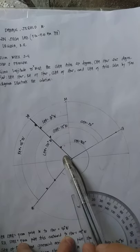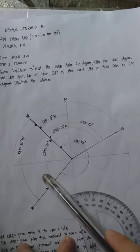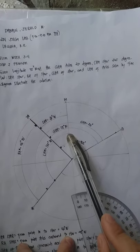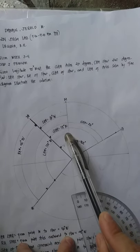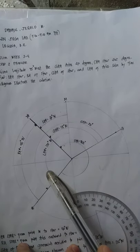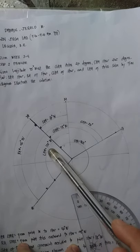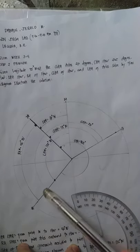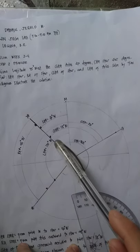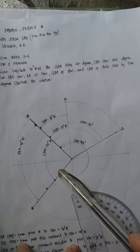The last value to find is the Local Hour Angle of Aries. From point M, the observer's meridian, going westward to Aries: this is 90° plus 45°, so that is why I get 135° west. That is all, thank you.